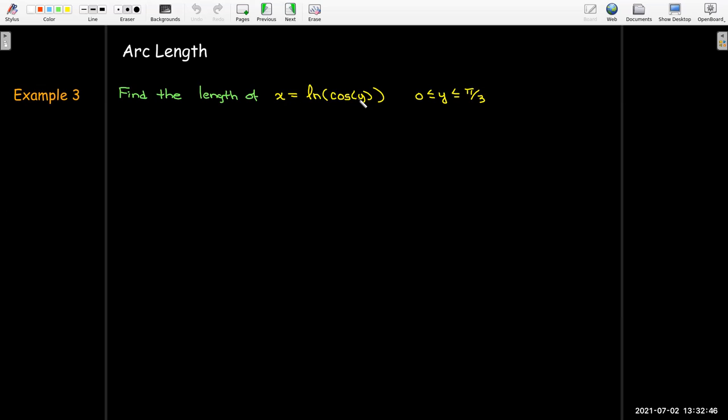So let's see here, we've got another x in terms of y, and so we're going to evaluate this again using a dy integral. So we're going to find the length of x equals ln(cos(y)) from y equals 0 to y equals π/3.